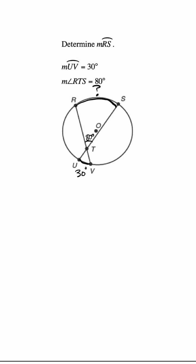So we can use that to solve for the missing arc. Let me just write this out. The measure of angle RTS is equal to one half times the measure of arc RS plus the measure of arc UV.